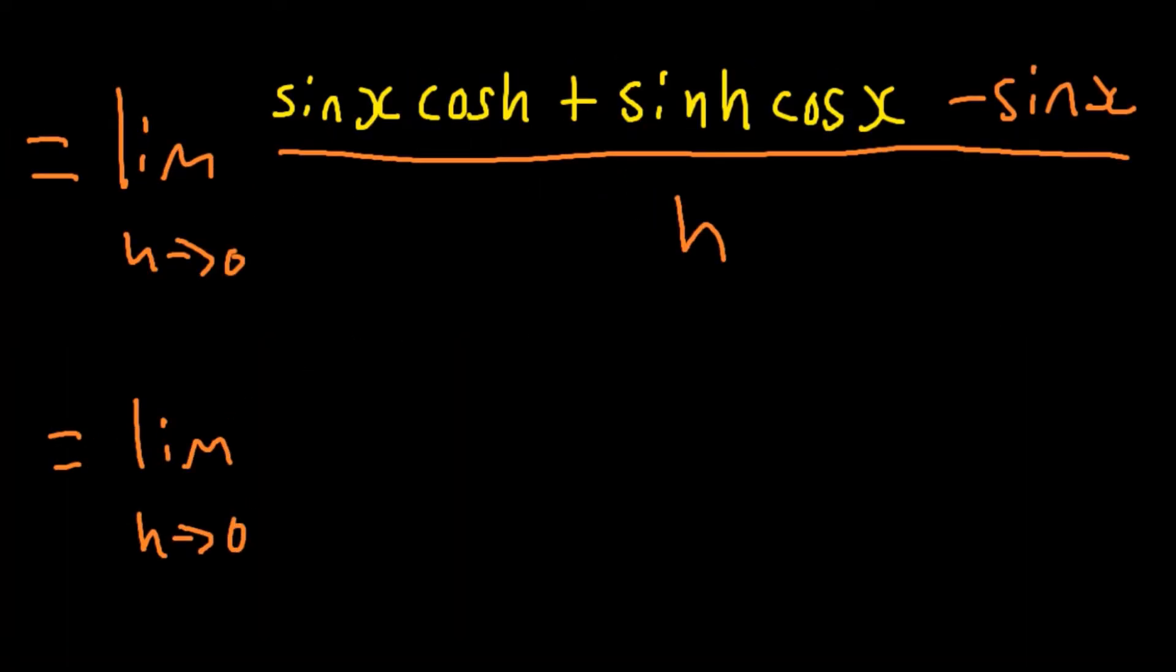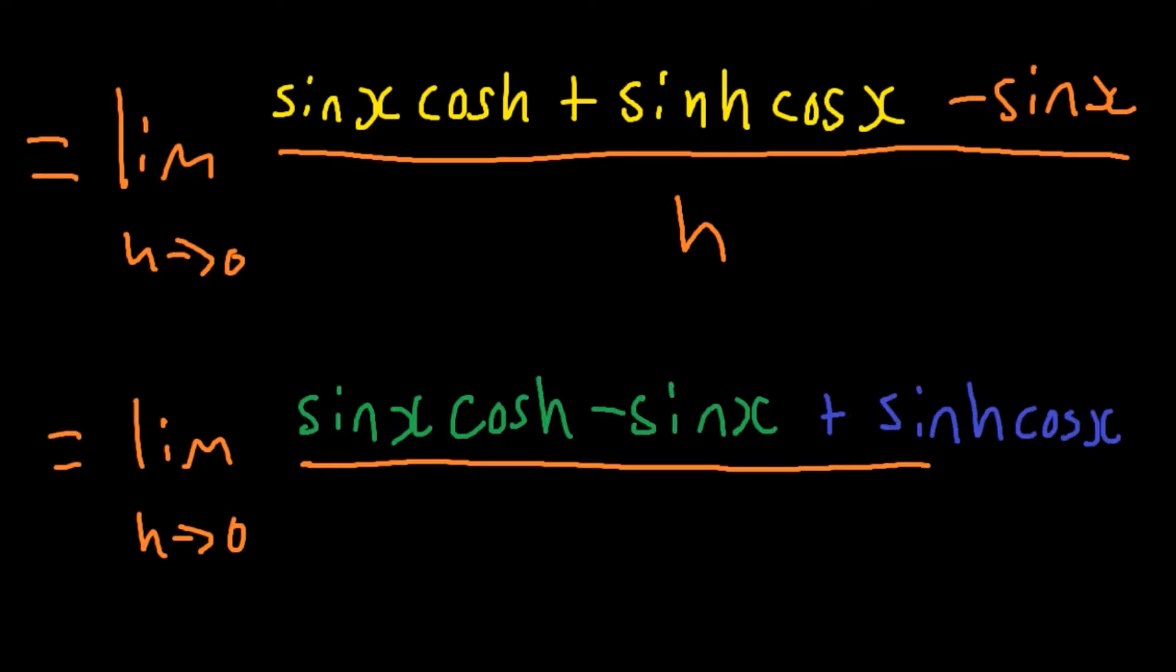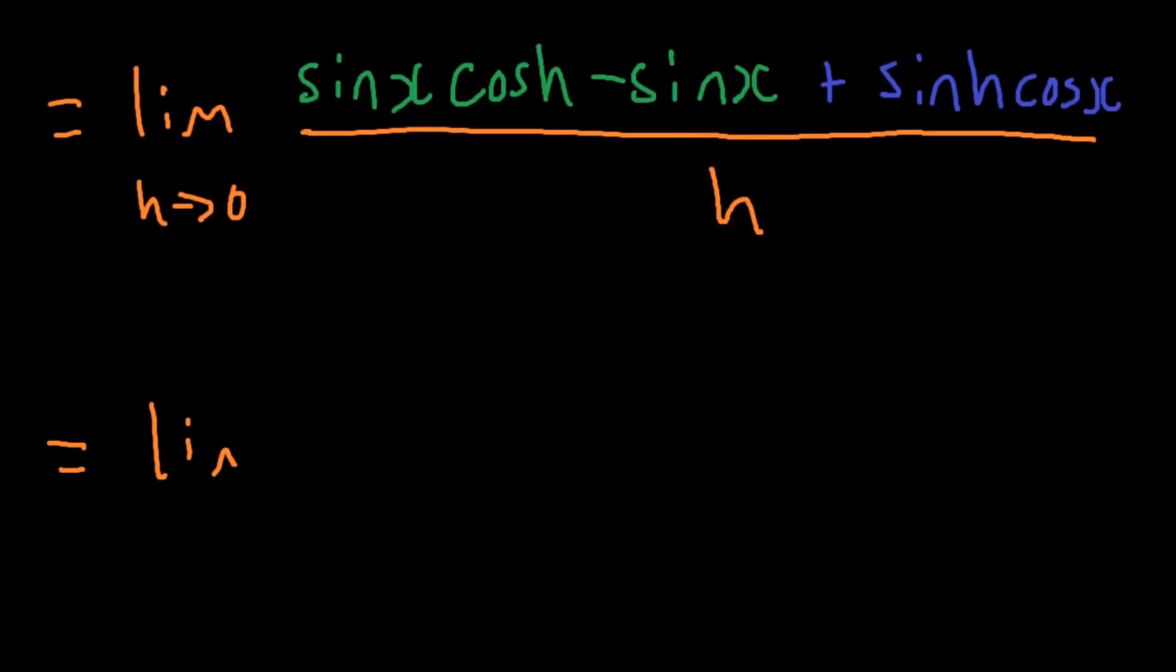We will first separate the terms that have a sine x and the terms that have a cos x on them. So, sine x to the left, cos x to the right, and then we separate them using the limit addition rule.